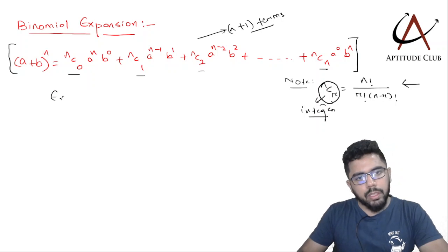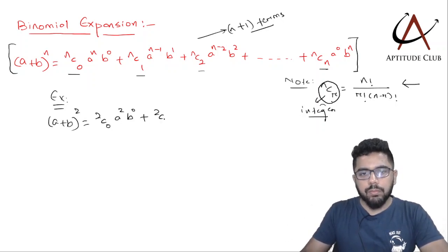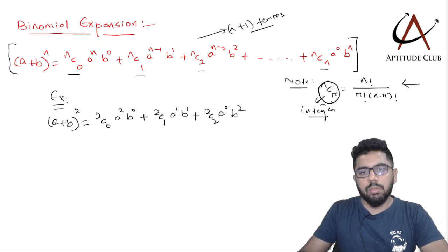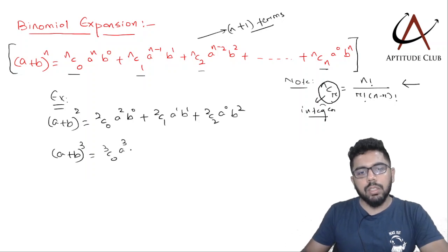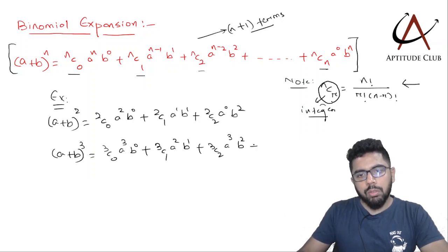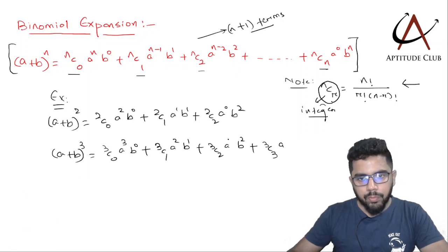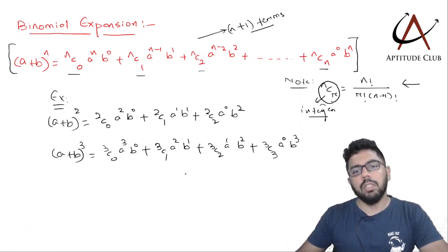To illustrate, (a + b)^2 = 2C0 · a^2 · b^0 + 2C1 · a^1 · b^1 + 2C2 · a^0 · b^2. Similarly, (a + b)^3 = 3C0 · a^3 · b^0 + 3C1 · a^2 · b^1 + 3C2 · a^1 · b^2 + 3C3 · a^0 · b^3, and so on.